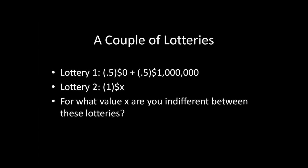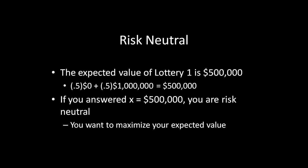In the comment section below this video, go ahead and tell me what that is. Maybe include a little bit of information about why you chose that particular amount. No matter what you put down, I can lump you into one of three categories. Category number 1 is risk neutral, based off of the expected value of Lottery 1.